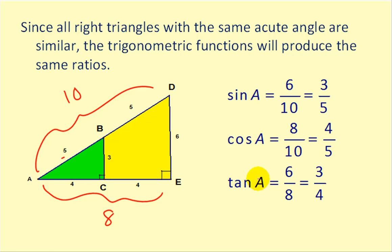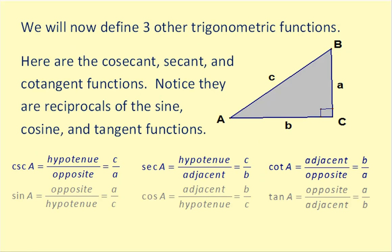For the tangent of A, we would have the opposite over the adjacent — six to eight for the large right triangle — and the smaller would be three fourths, again equivalent. Now let's define the three other trigonometric functions: cosecant, secant, and cotangent. Notice that these are reciprocals of the sine, cosine, and tangent functions.